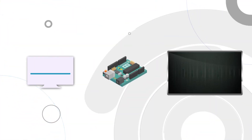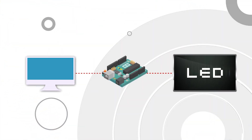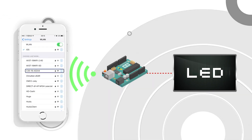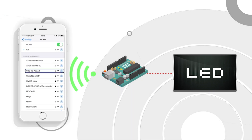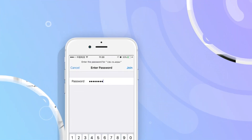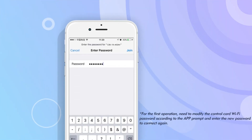After the Wi-Fi control card is powered on, find the Wi-Fi name of the control card in the wireless connection list of the cell phone. Click it and input the password for connection.